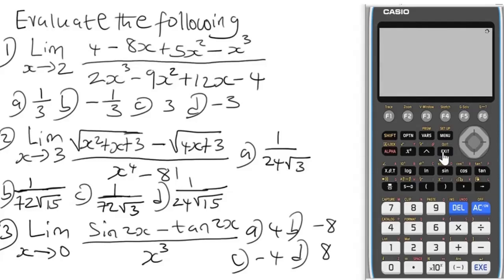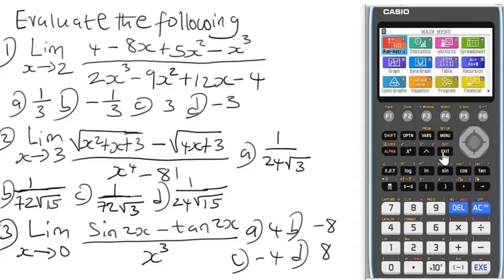So these are the questions you're going to solve — we have three questions to practice with. They are very simple; in a matter of seconds the answer will display. Now after resetting, let's begin Question 1. The question asks for the limit as x tends to 2 of a cubic rational function with a cubic numerator and denominator. Press EXE, then go to Run-Matrix.